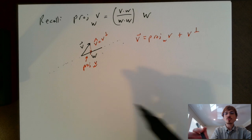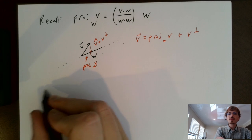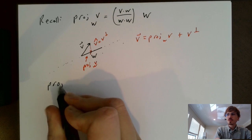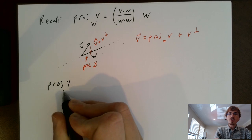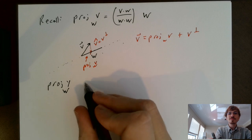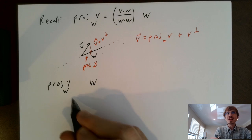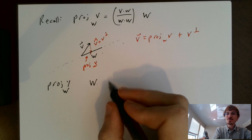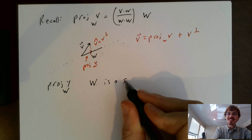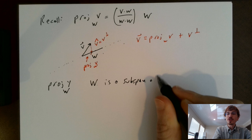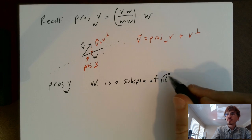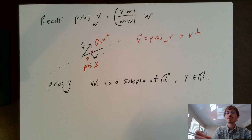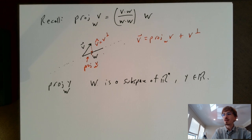So it's a natural question: what if we wanted to project a vector, maybe y, onto a subspace W? — capital W, and this is a capital W now. Capital W is a subspace of R^n, and y is some other vector in R^n. How do we orthogonally project y onto a subspace?